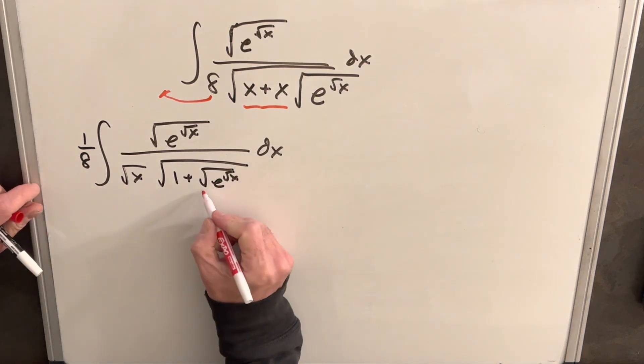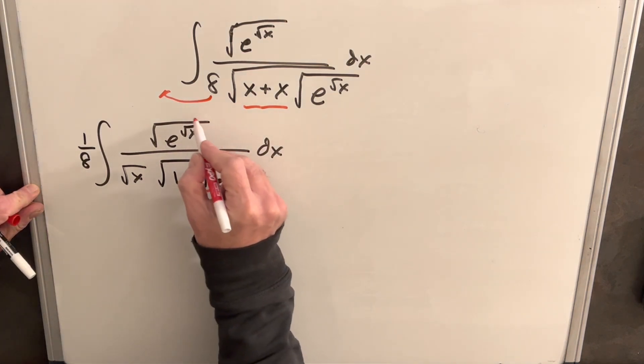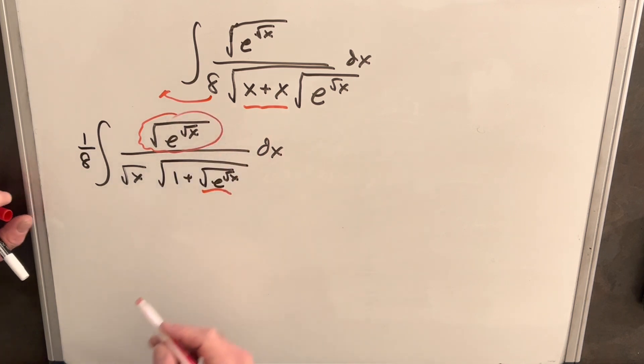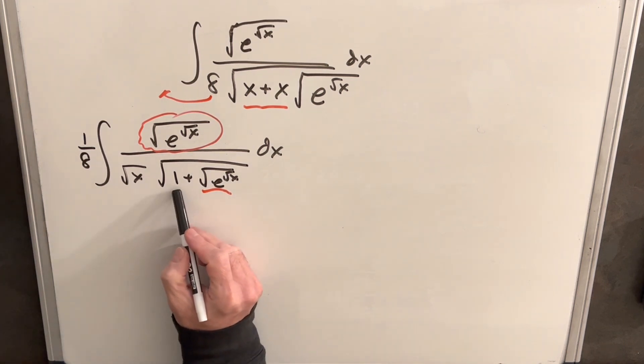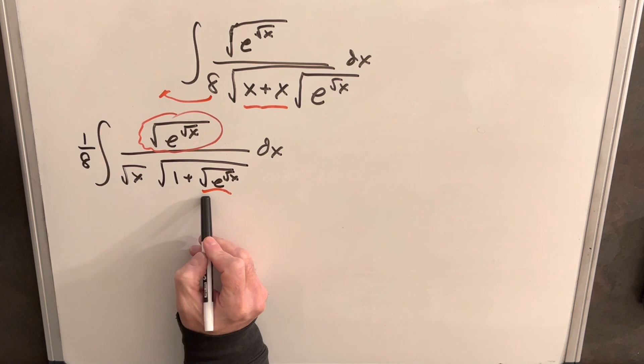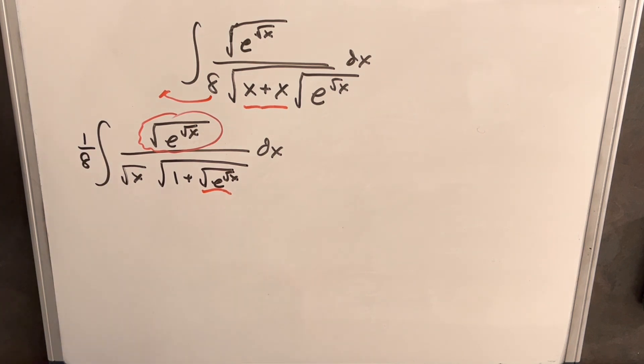And then I noticed this piece and this piece are exactly the same, which is a good sign that we can maybe do something with that. I think what I want to do is try a u substitution. We also know if this is just a 1, if this is our u in here, when we differentiate, the 1's just going to go away.